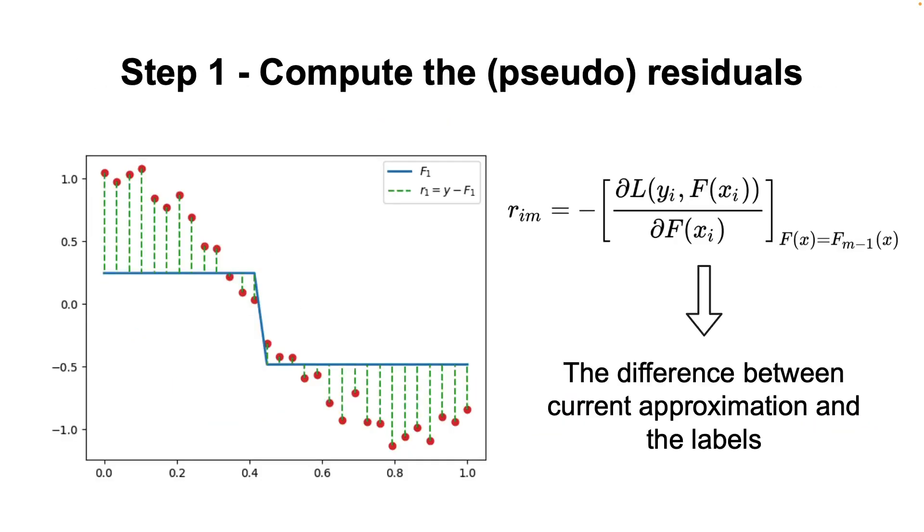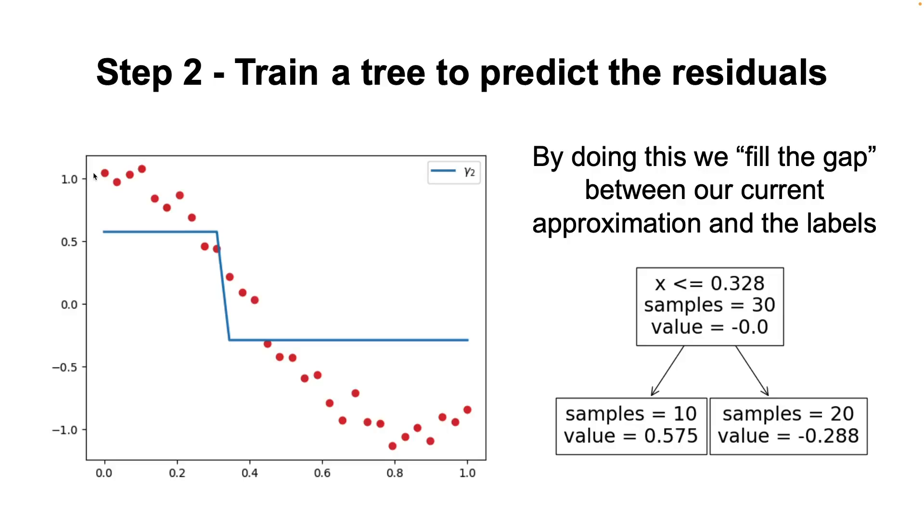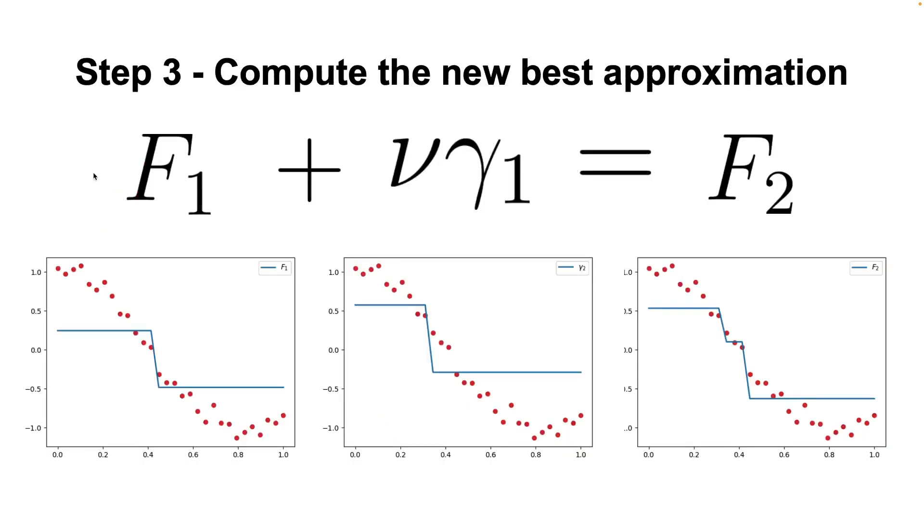So, we compute the residuals, then we train a new tree to predict the residuals, and then we add the predictions of the tree to our current approximation f1, obtaining f2. You can see in the image on the right that the overall approximation has significantly improved from our initial hypothesis f0.